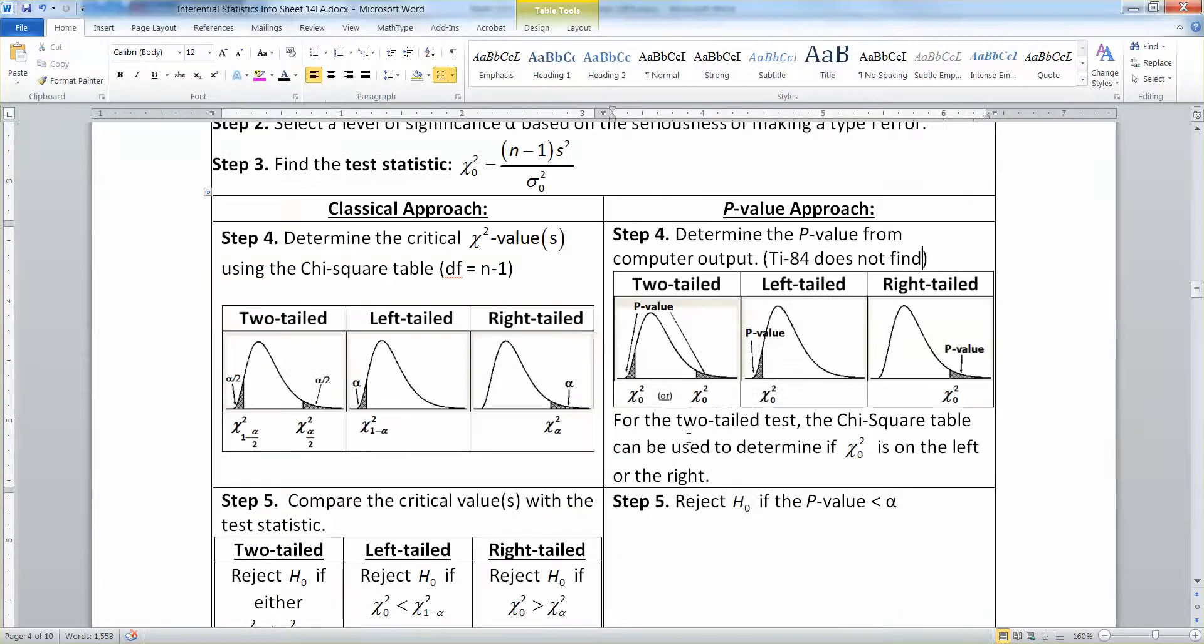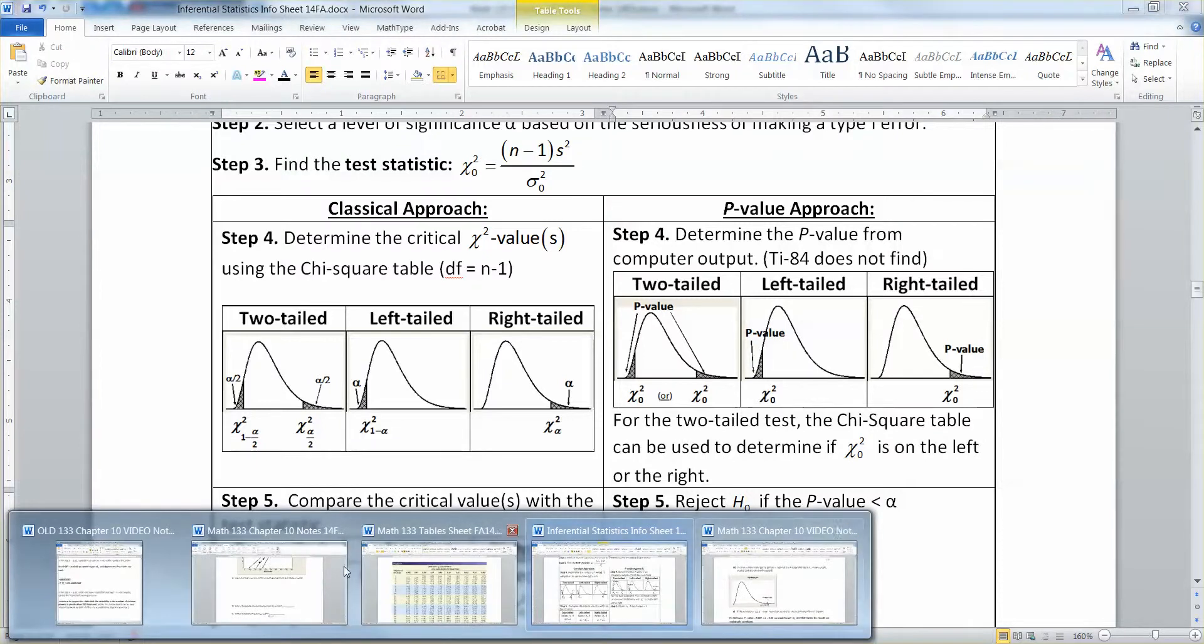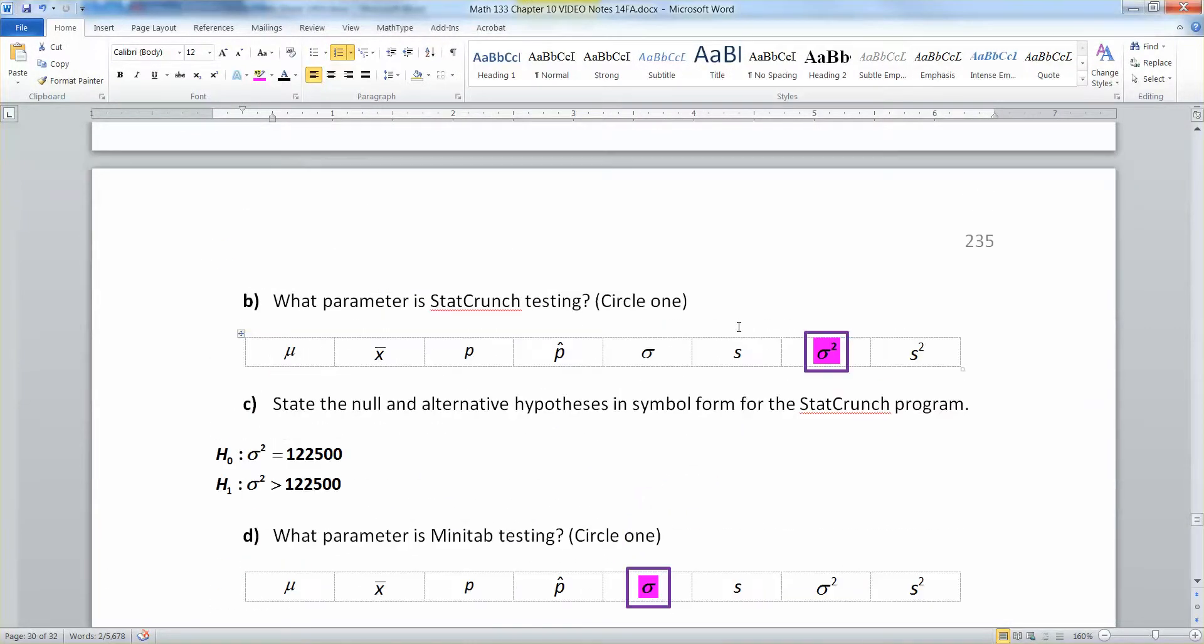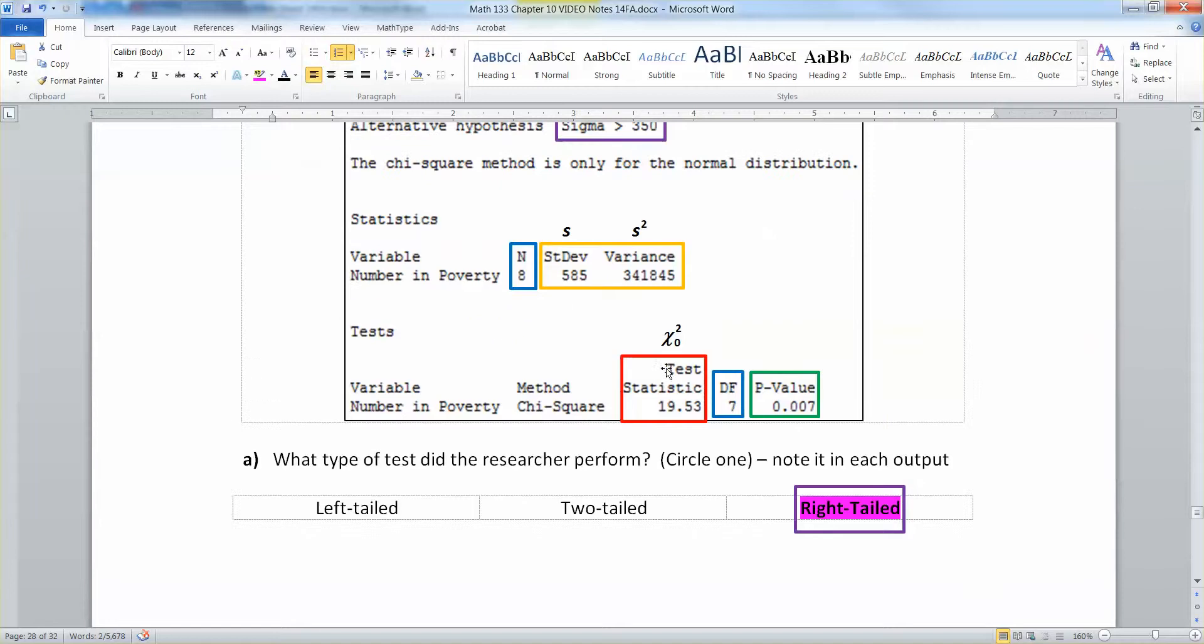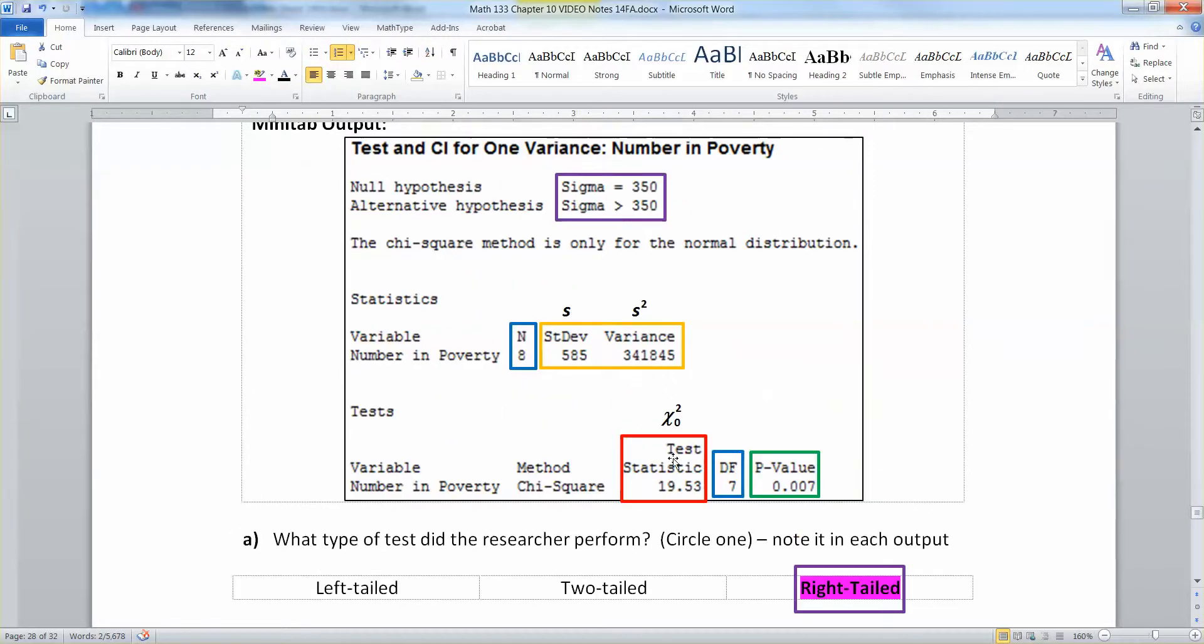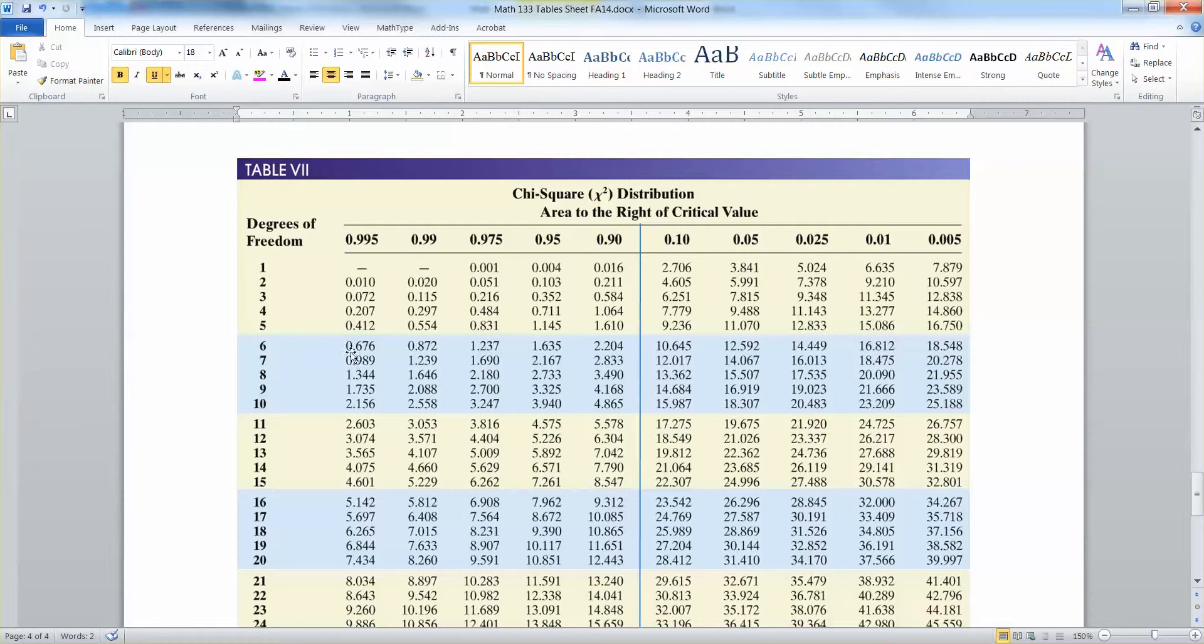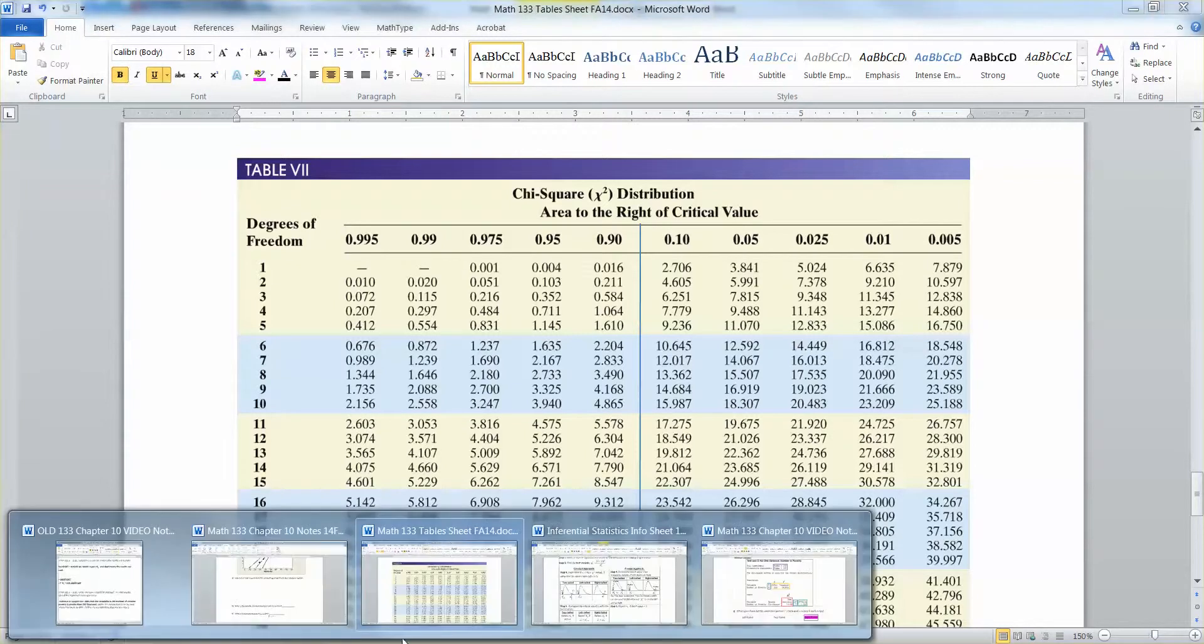Now, before I go any further, let me just talk a little bit more about this two-tailed test business, because it's a little bit strange. The thing about the two-tailed test is when you get a stat from your computer output, like we have right here, when we have this stat of 19.53, it's a little bit unclear whether it's on the right or the left if you're doing a two-tailed test. The way to figure it out is to look at your degrees of freedom.